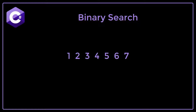Pretend we have a list of integers 1, 2, 3, 4, 5, 6, and 7. We will use a binary search to find 2. The binary search starts out at element 4, the middle element in the collection. Since 2, the element we are looking for, is less than 4, it moves on to the left half of the collection.